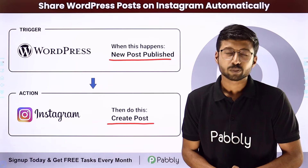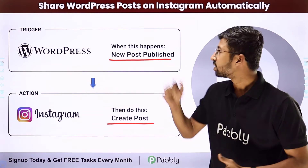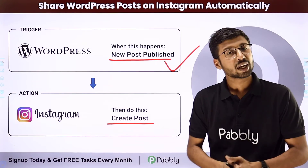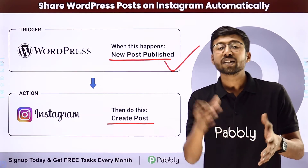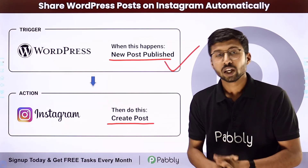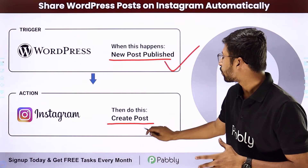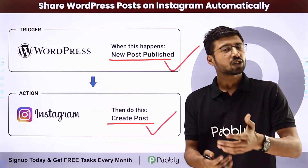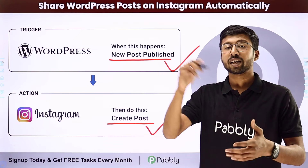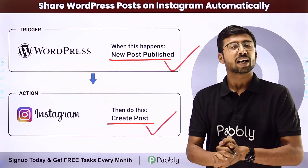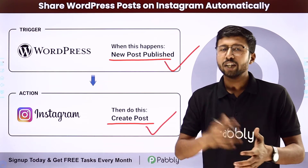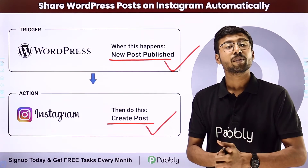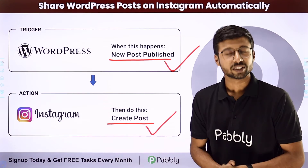You can completely automate this process. Using this automation, whenever a new post is published on our WordPress site, automatically the thumbnail and the title used in that post will be used to create a new post on our Instagram profile as well. You can also write a caption like 'the link is in the bio' and mention the title of the post, posting the thumbnail image on Instagram.